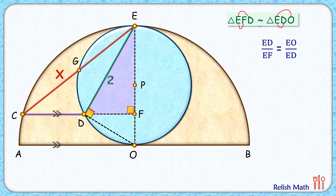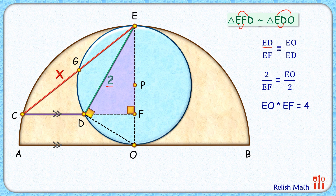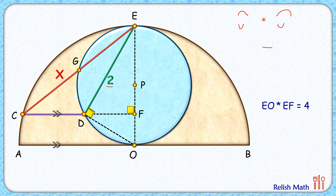Here the length ED is 2 centimeters, so putting ED as 2 we get 2 upon EF equals EO upon 2. Simplifying, we get EO times EF equals 4. This result we'll use further, so let's note it down.